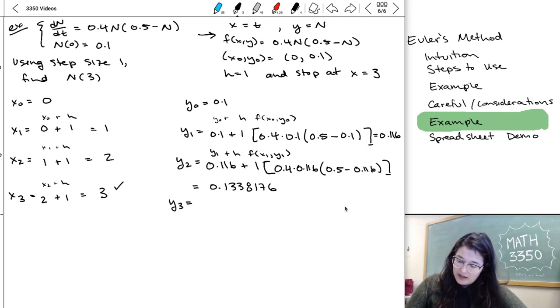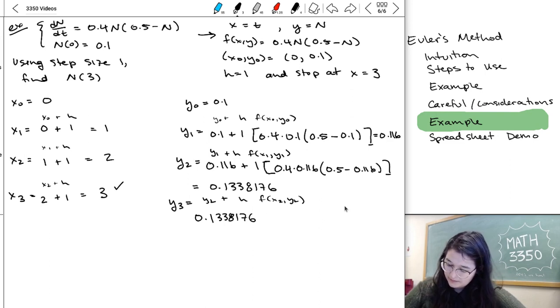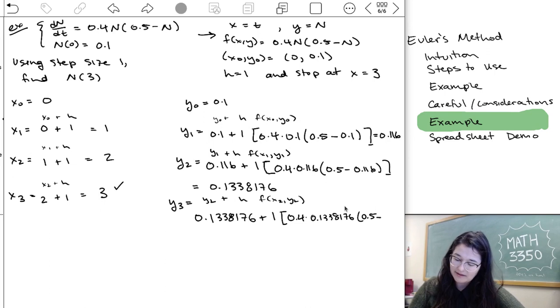Then y3 is going to be y2 plus h times f of x2 y2, which is 0.1338176 plus my step size 1 times that same function we've been going back to, but now I plug in that whole thing for n, so 0.4 times 0.1338176 times 0.5 minus, I thought I left enough room, but I didn't, so I'm going to scooch it all over.